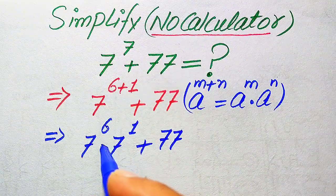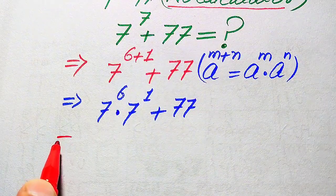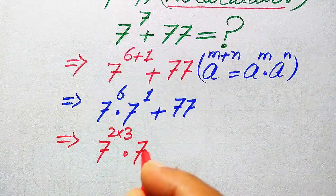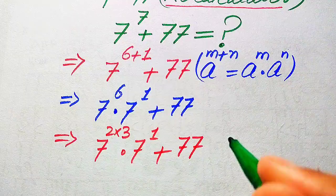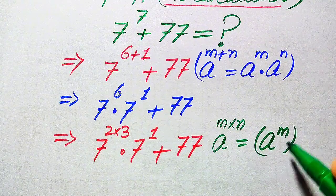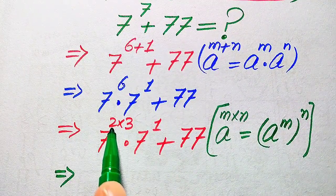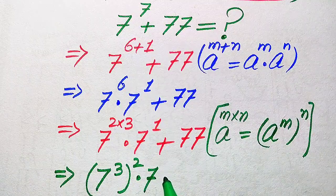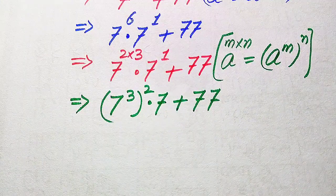In the next step we need more simplifications. We again focus on the exponent 6 and write it as 2 multiplied by 3, giving 7 to the power of 2×3, multiplied by 7 to the power of 1, plus 77. We use another exponential law: a to the power of m×n equals a to the power of m, to the power of n. Applying this rule, we move the 3 inside the term, making it 7 cubed whole squared, multiplied by 7, plus 77.